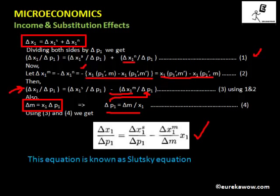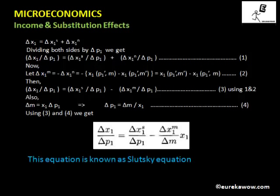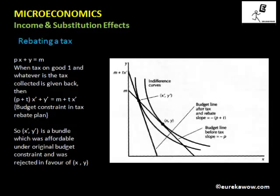Now let us take an example of rebating a tax. Suppose we have the original budget constraint PX plus Y equals M. The consumer is paying a tax T on good one. If there is no rebating of tax, then the price of good one increases from P to P plus T, while the price of good two remains the same. So the budget line shifts to a steeper red line.